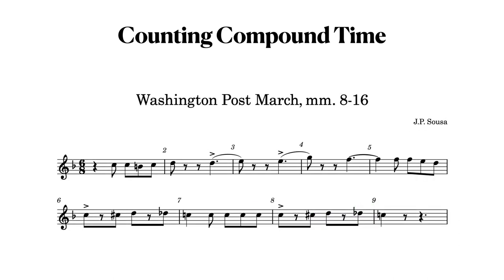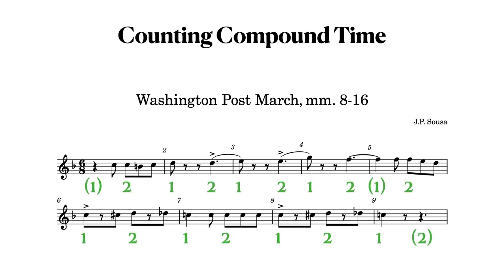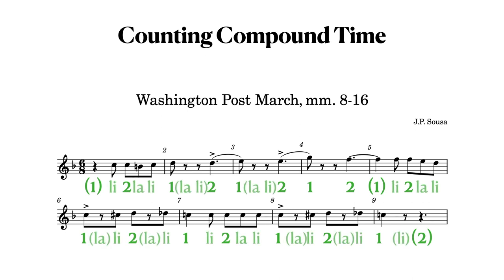In this last musical example, there are 6 8th notes per measure. The beats are grouped every 3 8th notes. Once we establish where the beats are, we can then determine where the 2nd third and the 3rd third of each beat occurs. With a metronome, we would count it this way.